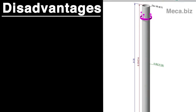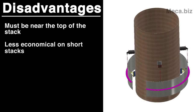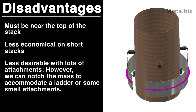The TMD does have some disadvantages. It must be near the top of the stack, which is not always desirable. For short stacks, it can sometimes be a less economical option, and it is less desirable when there are a lot of attachments. However, the mass can be notched to allow a ladder or some other small attachments such as piping to pass through the TMD.